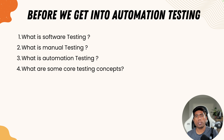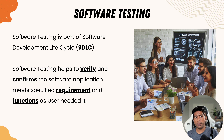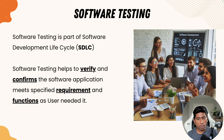Before we get into automation testing itself, let's first understand what software testing is all about, what manual testing is, what automation testing is, and what are some of the core testing concepts. Software testing is part of the bigger software development life cycle, otherwise called SDLC. You can think of it as a life cycle where software is created from start to end until it lands in a customer's hand, and software testing is one of the most fundamental components of the SDLC.